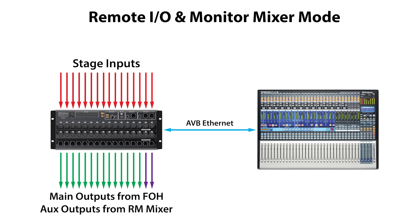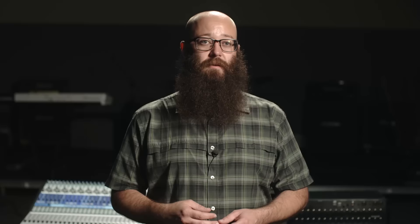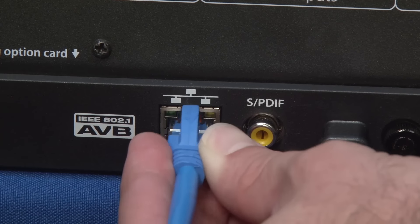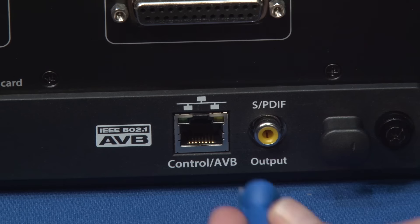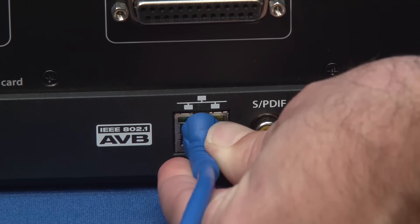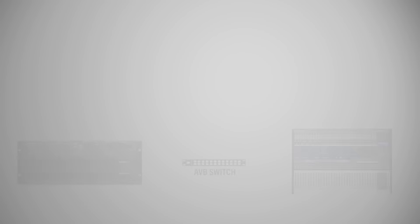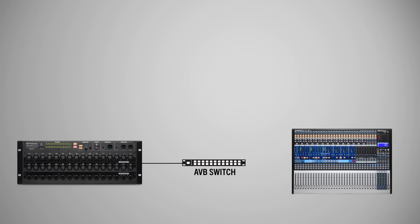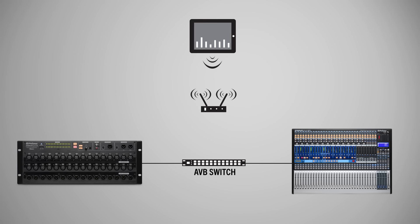There are two ways to configure your network for using the RM mixer as a stage box. You can do a direct connection with a single Ethernet cable going between the RM mixer and the AI console mixer, or you can connect them using an AVB switch. Using an AVB switch is the recommended method if you'd like to also connect a router for using wired or wireless control devices, such as an iPad or computer running UC Surface, or iPhones running QMix.